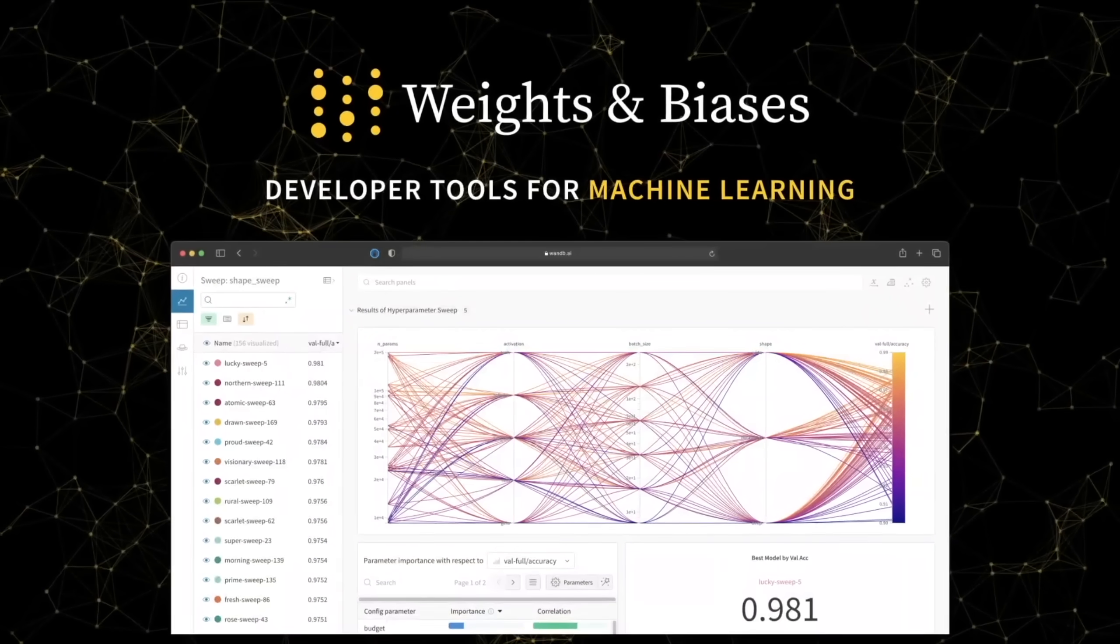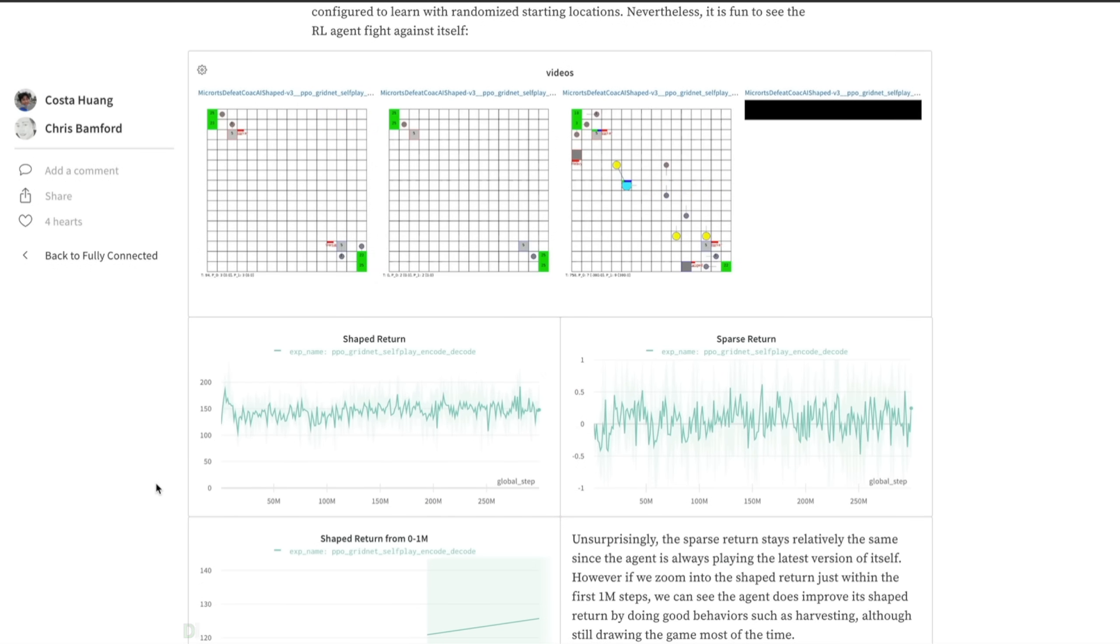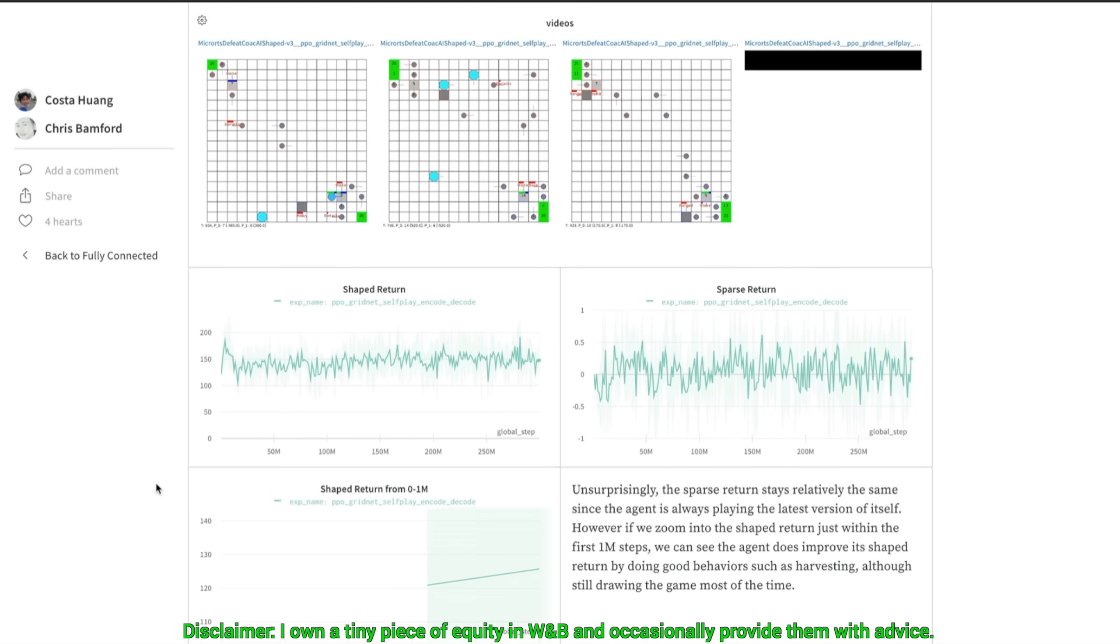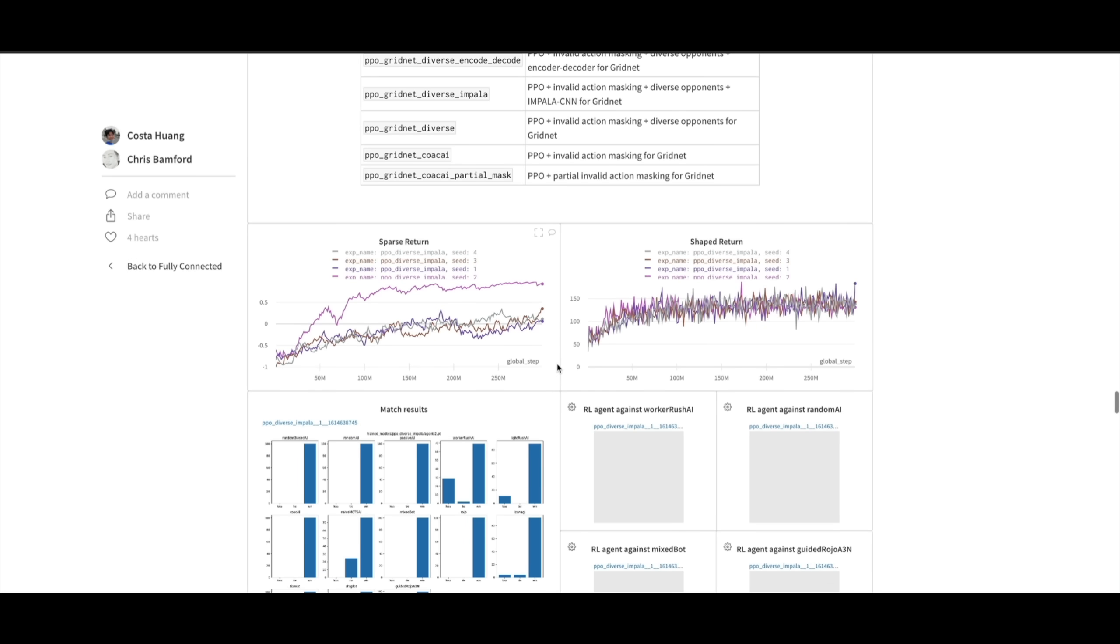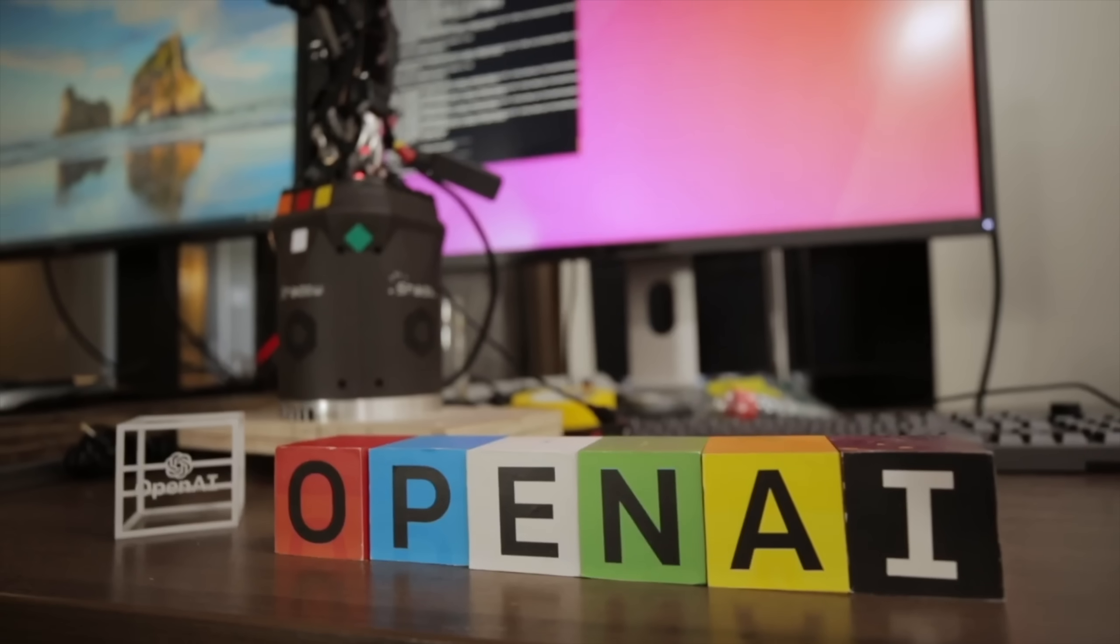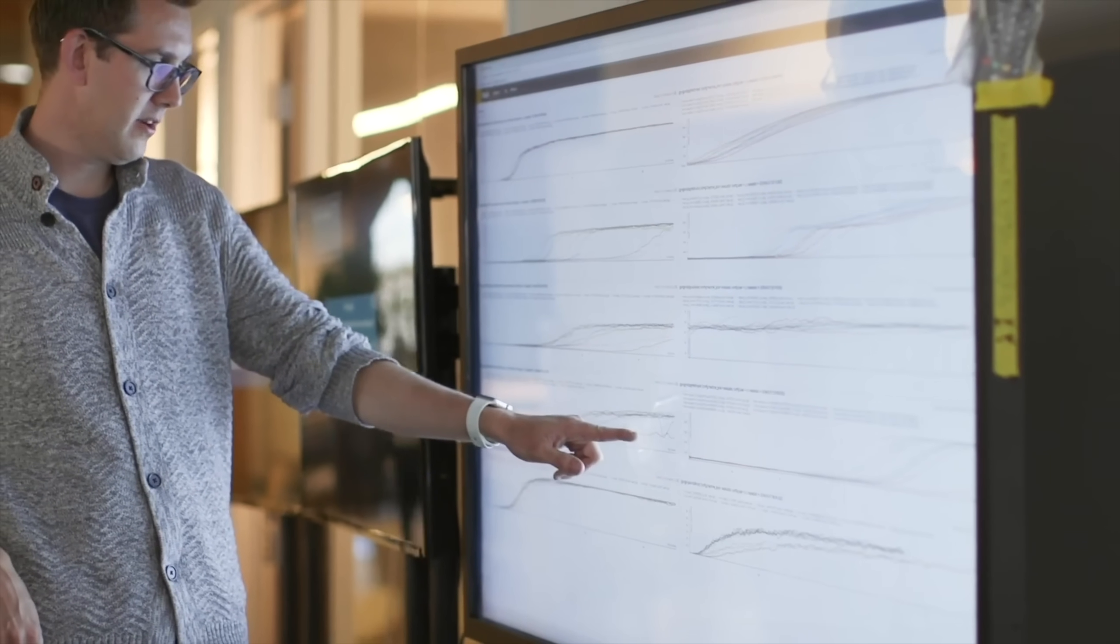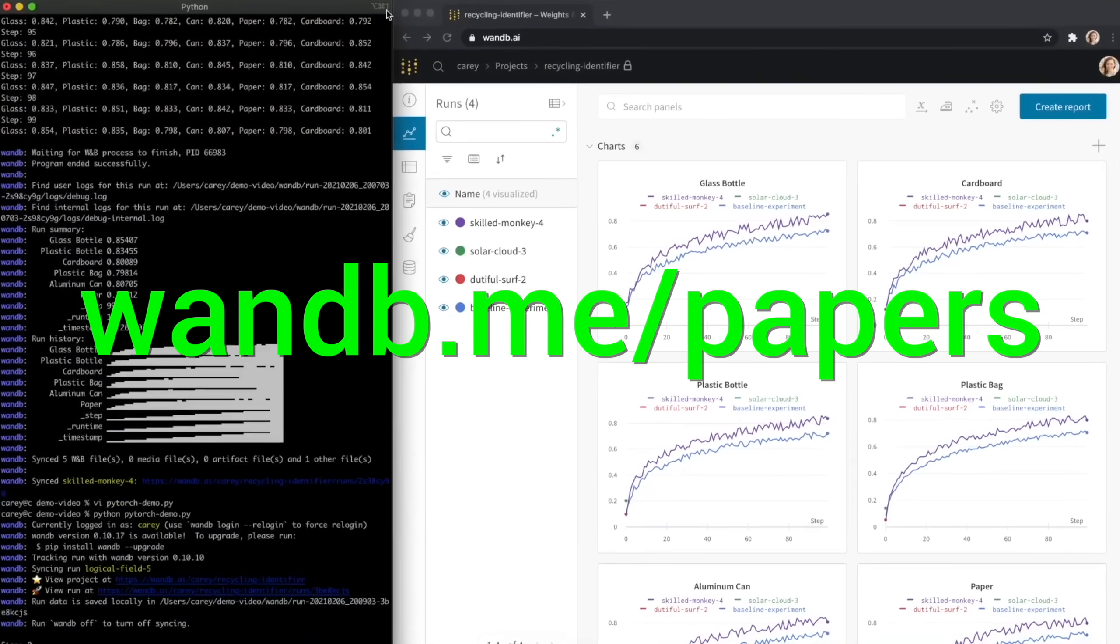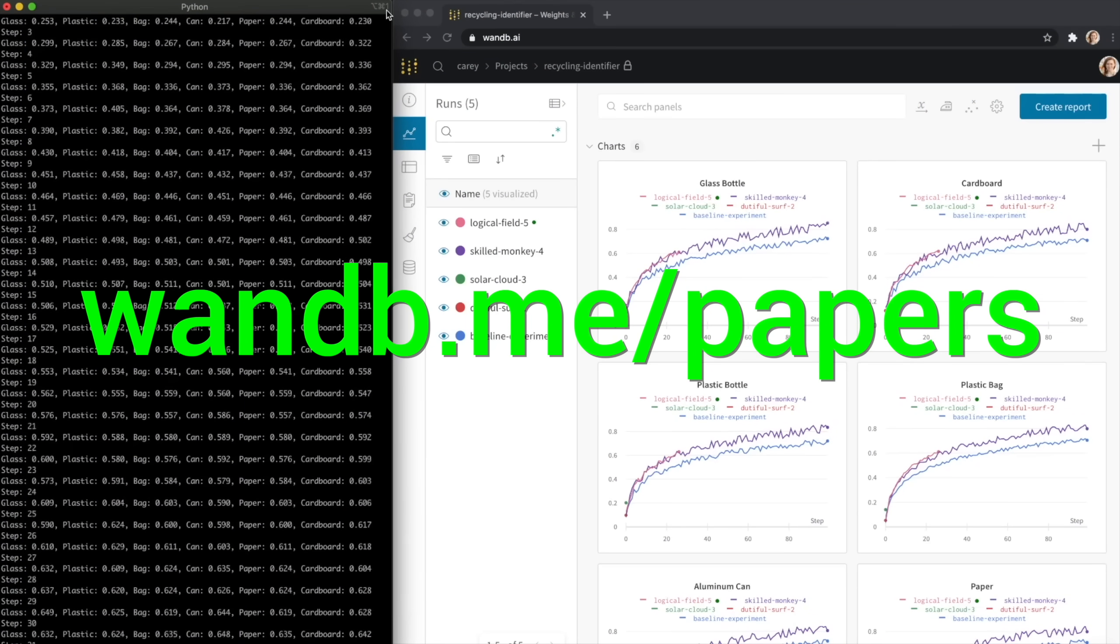When I was a PhD student, my experiments created lots of data for my deep learning projects. But I was not looking for more data, I was looking for insights. This is what Weights and Biases does, and it is the best. Everyone is using it. Try it out now at wnb.me slash papers or click the link in the description below.